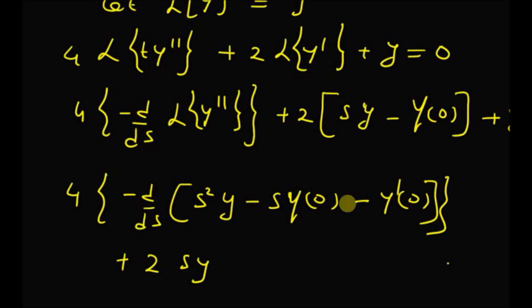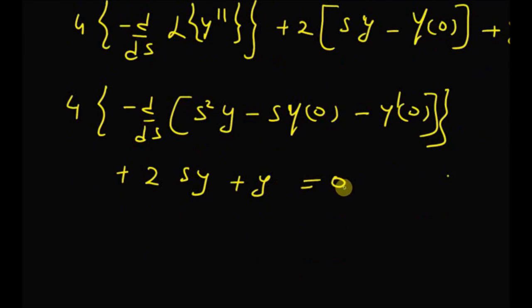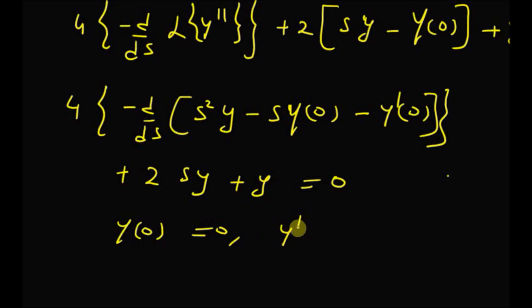The last term is lowercase y, and the sum equals 0. The initial value y(0) = 0 for sin(√t), and y'(0) is the initial value of cos(√t)/√t. Since cos(θ)/θ → 0 as θ → 0, y'(0) = 0 as well.